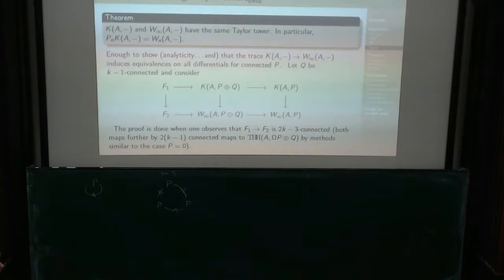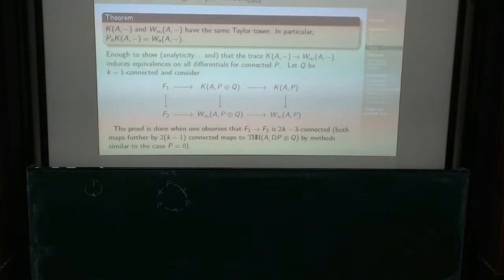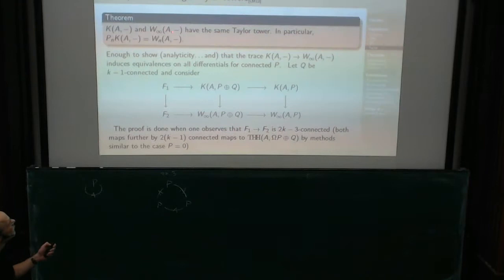The upshot is that one way of seeing this is that you show these two things have the same Taylor Tower by showing they have the same differential in a neighborhood. These functors should be considered as functors in the bimodules, yes. Or you could, if you want, take it of spaces at the end — that's your choice.